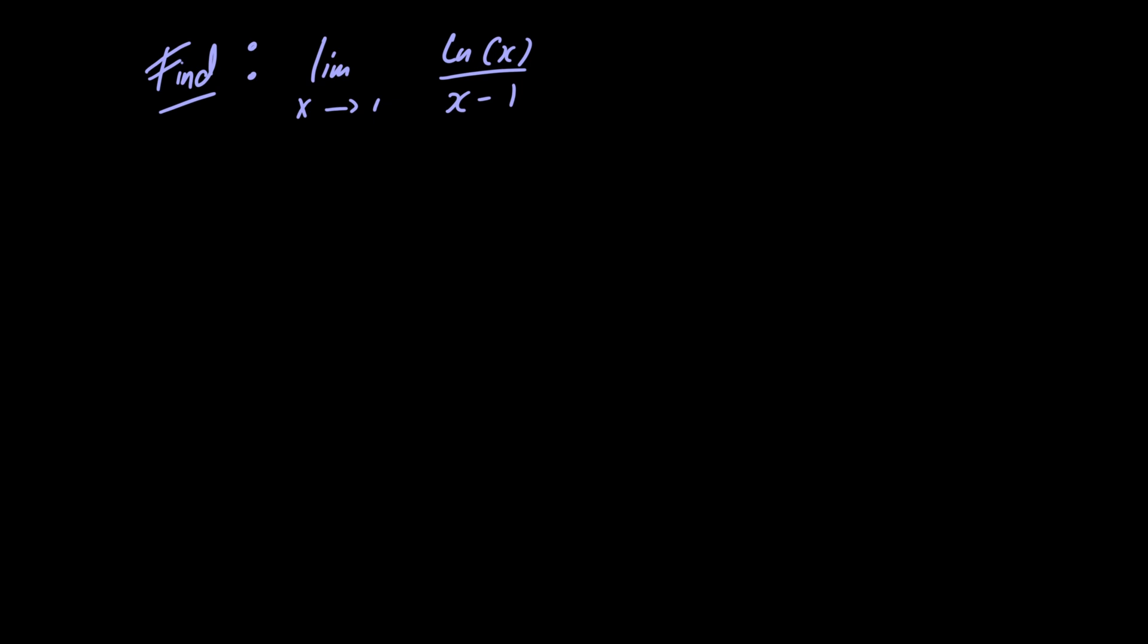We can't just go ahead and let x equal 1 because we would have 1 minus 1 which equals 0 in the denominator and we can't divide by 0. So we're going to have to evaluate this limit using some other method.